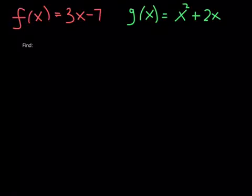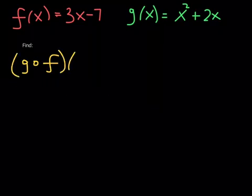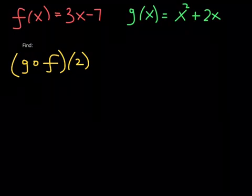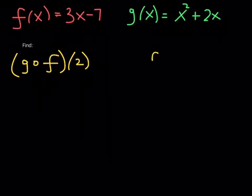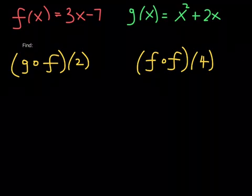The same two given functions: f is still 3x minus 7, g of x is still x squared plus 2x. Here are the last two examples. Find g composed with f at 2 — notice we changed the order of the composition; instead of f composed with g, it's g composed with f. And then find f composed with f at positive 4, which is f composed with itself. Why don't you pause the video and try both of these right now?